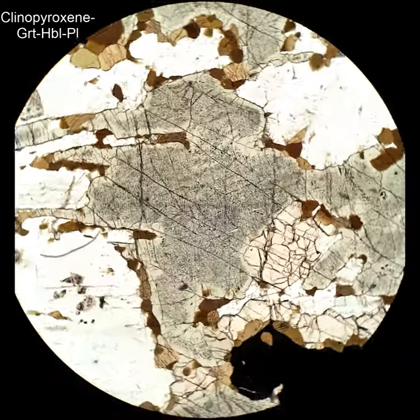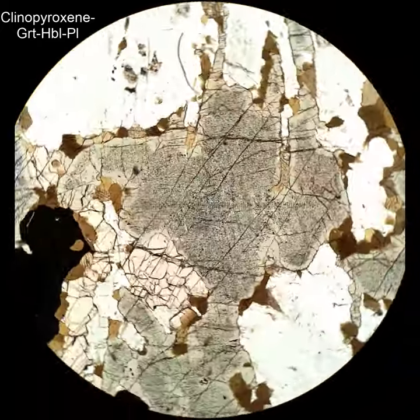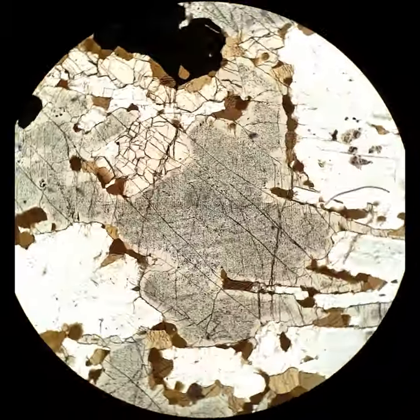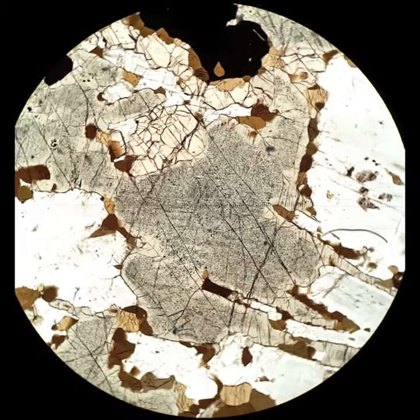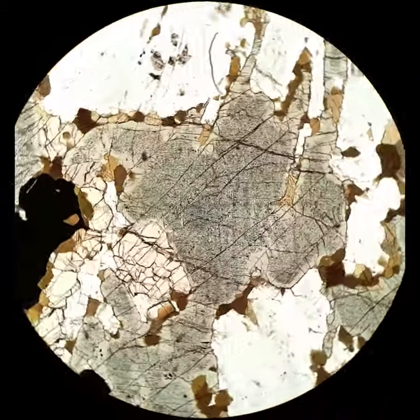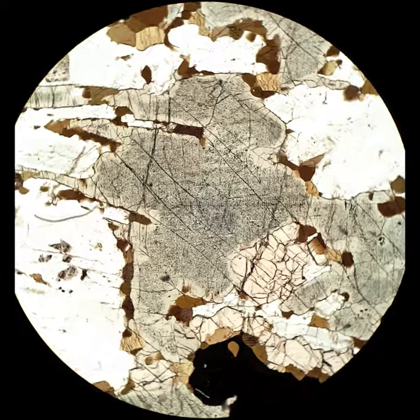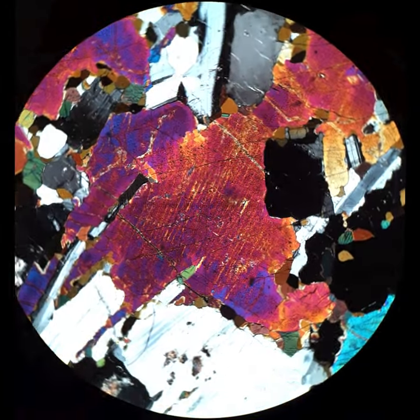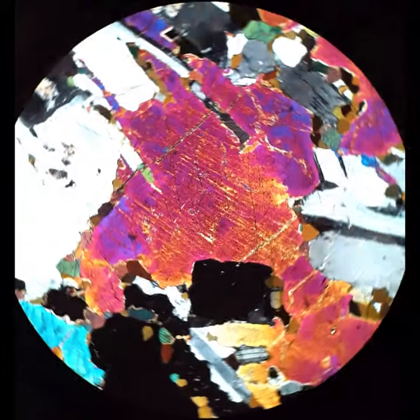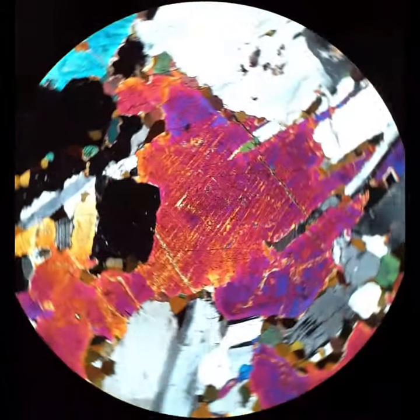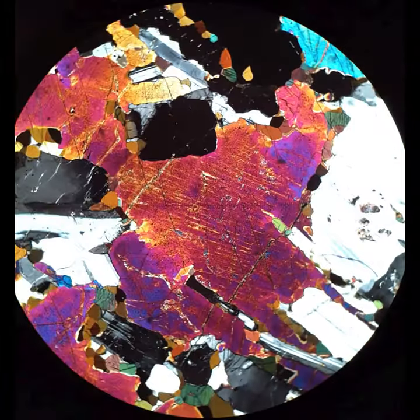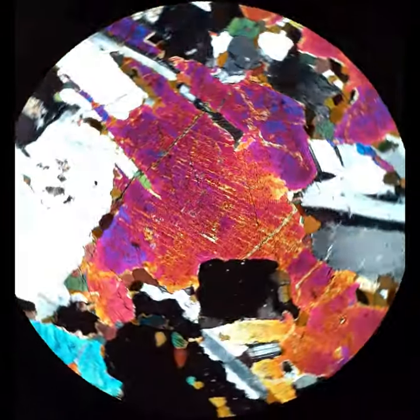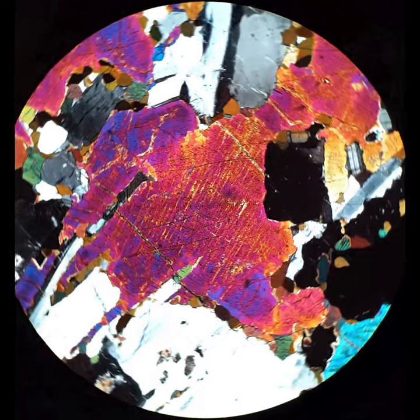And then this is an igneous pyroxene that's been altered by metamorphism. Here the brown lower-relief mineral is hornblende. There's some higher-relief garnet. But all of those little black speckles in there are oxides. They have been liberated from the pyroxene as it's metamorphosed. You can also see some streaks running through the pyroxene. That's probably orthopyroxene exsolution because it's a high-temperature pyroxene that's cooled slowly.